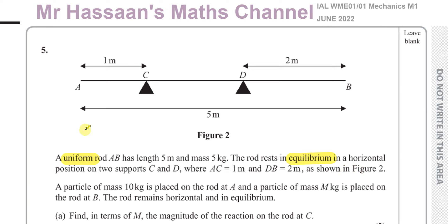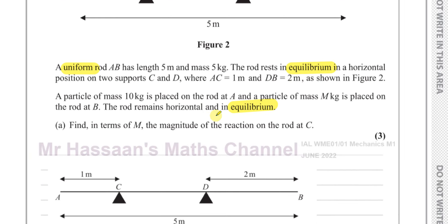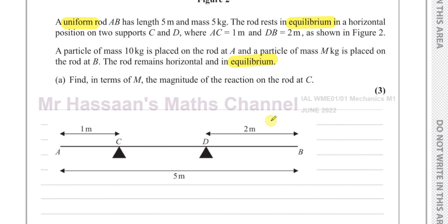They tell us that a particle of mass 10 kilograms is placed on the rod at A, and a particle of mass M kilograms is placed on the rod at B. The rod remains horizontal and in equilibrium.